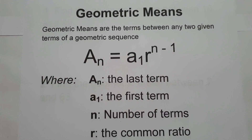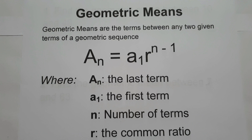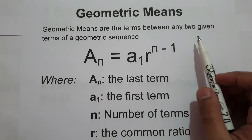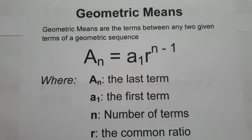For today's video, we are going to talk about what geometric means are, and we are going to find out how to find the geometric means of a given sequence. First, let us define what geometric means are. Geometric means are the terms between any two given terms of a geometric sequence.